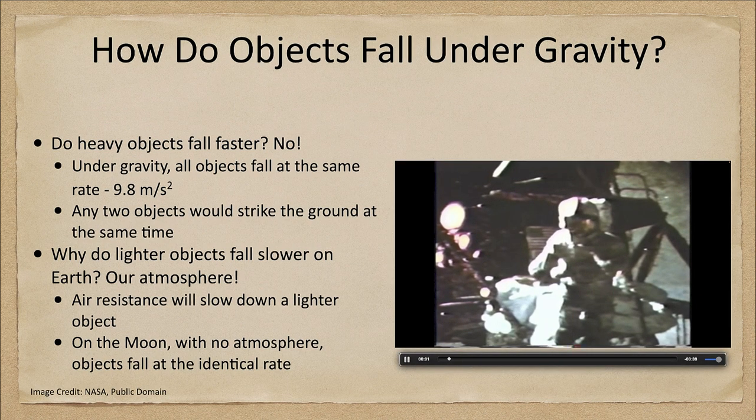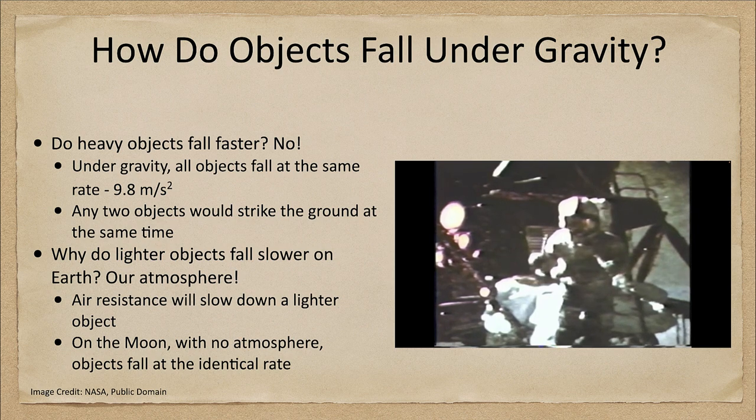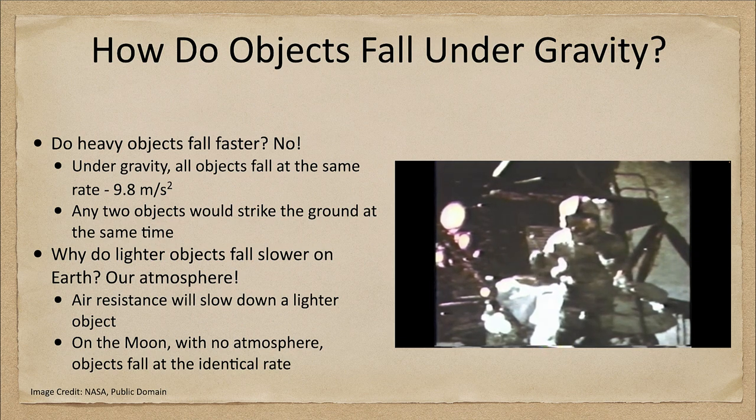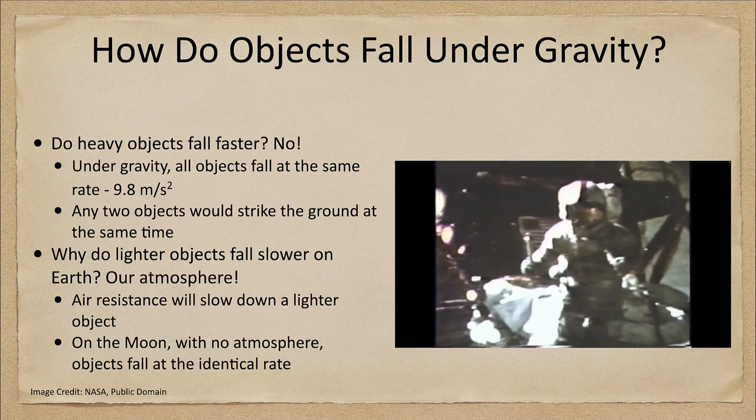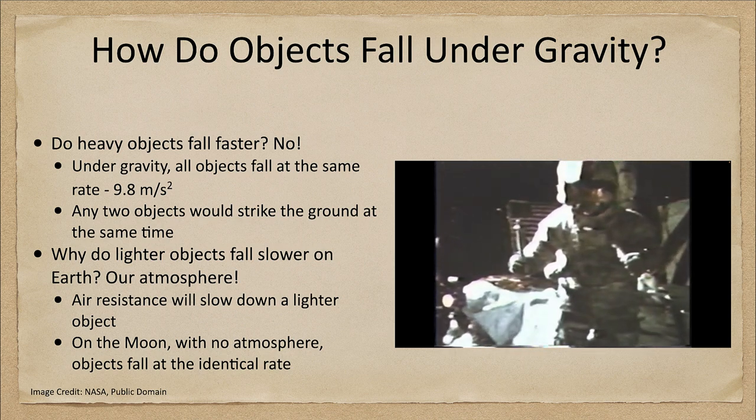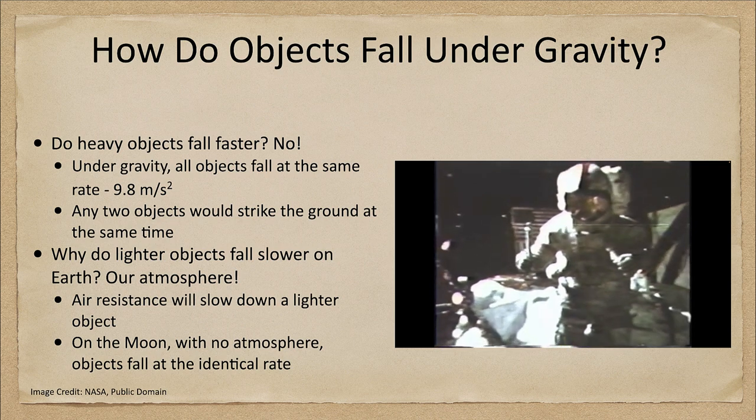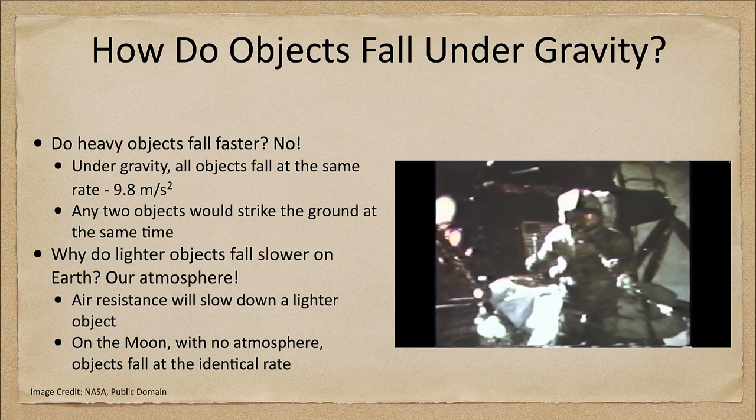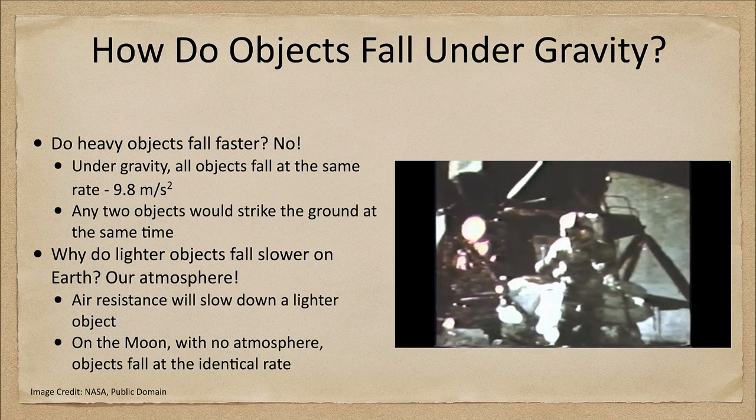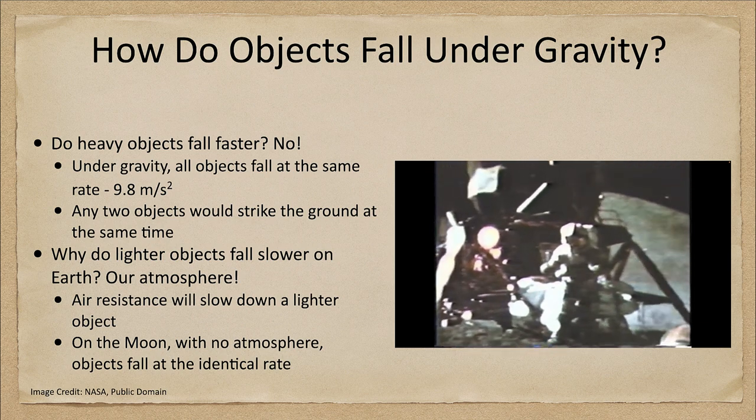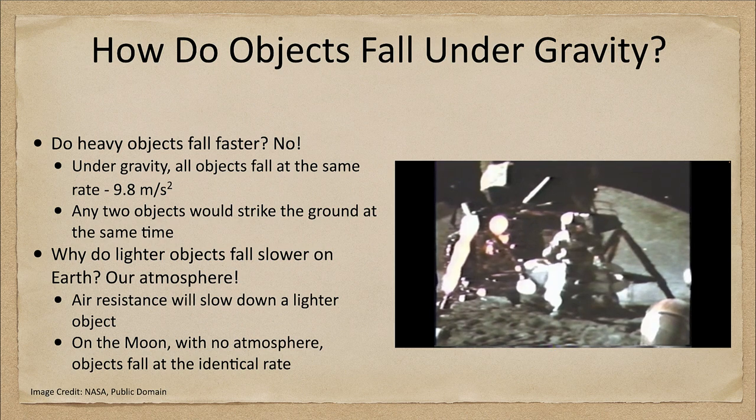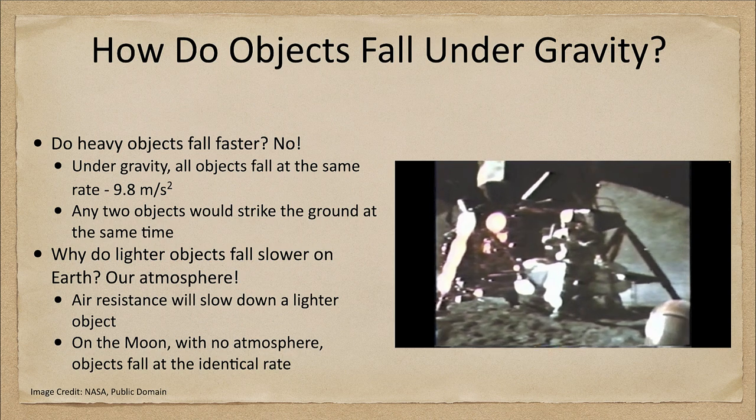Well, in my left hand I have a feather, in my right hand a hammer. I guess one of the reasons we got here today was because of a gentleman named Galileo a long time ago who made a rather significant discovery about falling objects in gravity fields. We thought, where would be a better place to confirm his findings than on the moon? So we thought we'd try it here for you. The feather happens to be appropriately a falcon feather for our falcon, and I'll drop the two of them here and hopefully they'll hit the ground at the same time.